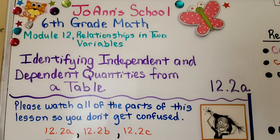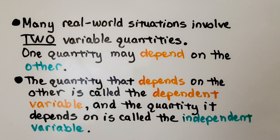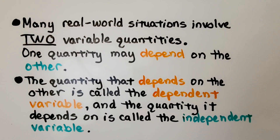Lesson 12.2a: Identifying Independent and Dependent Quantities from a Table. Many real-world situations involve two variable quantities. One quantity may depend on the other. The quantity that depends on the other is called the dependent variable, and the quantity it depends on is called the independent variable.